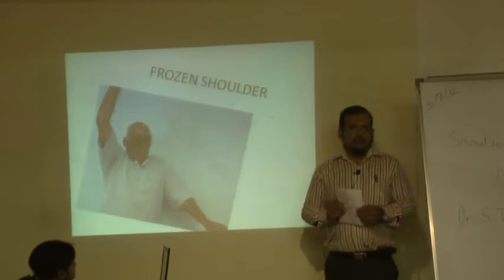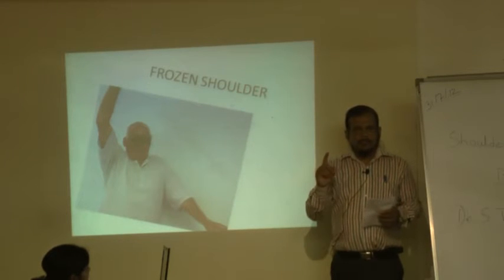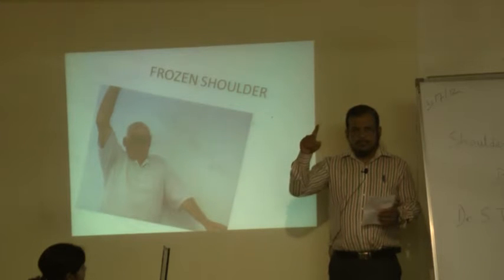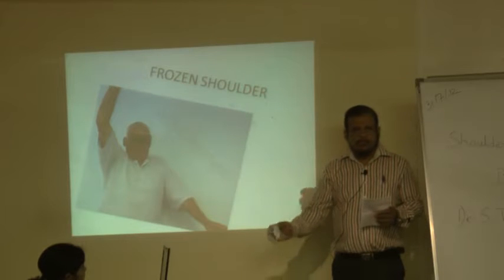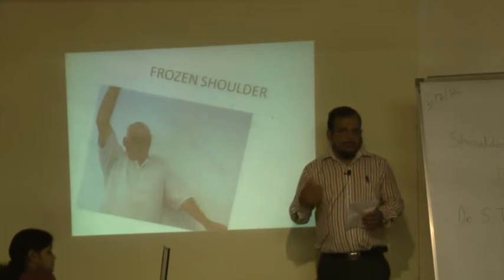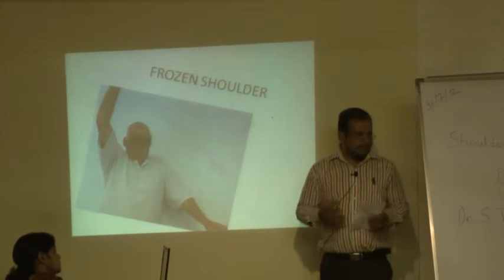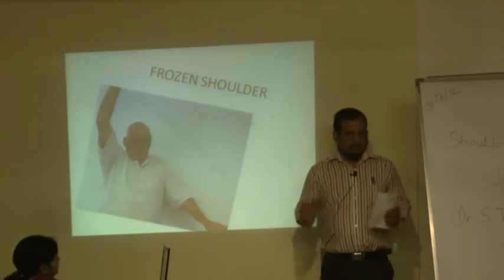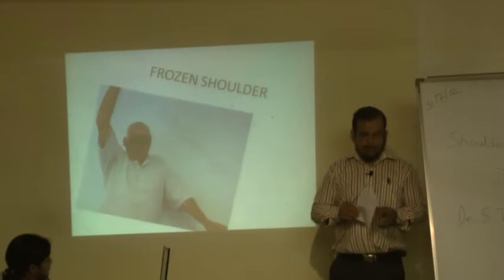The usual course of a frozen shoulder is 1 to 2 years. It starts, takes about 6 months to 1 year, sometimes 2 years, going in an ascending course, reaching a peak when the pain is really horrible, then gradually goes down. But if you promote exercises and encourage the person to do them, and now there are certain injections available — especially to lubricate the joint, which are not steroids — it can reduce the course of the frozen shoulder.